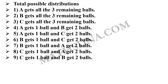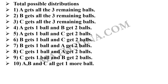Still, there is 1 case remaining. That is, all the 3 members get 1 more ball each. That is, A has total 2 balls, B will be having total 2 balls, and C will be having total 2 balls — because already they each have 1 ball in the beginning. So the 10th case is A, B and C all of them getting 1 more ball.